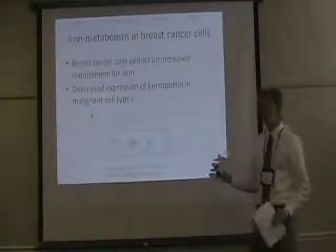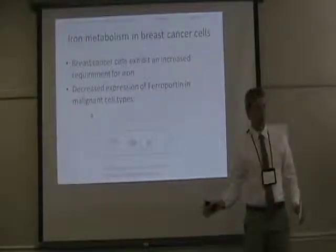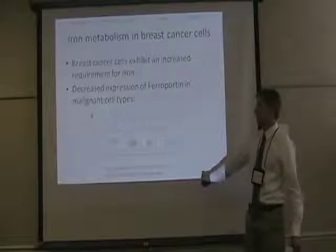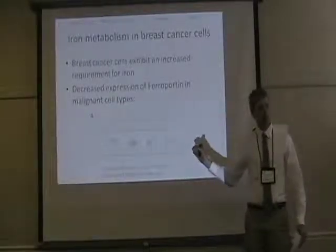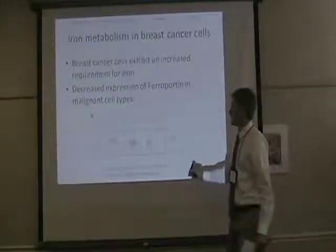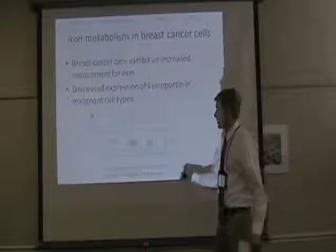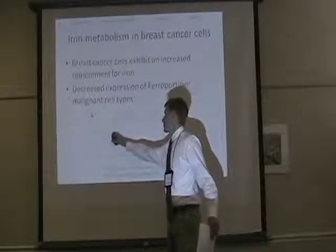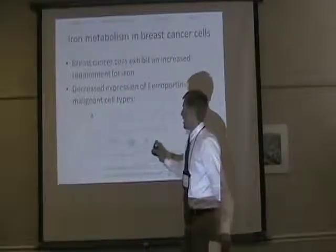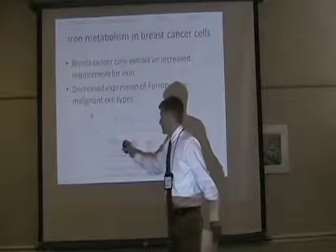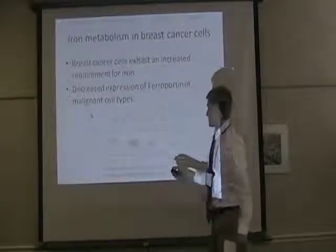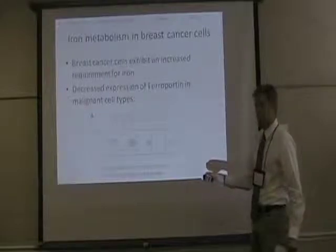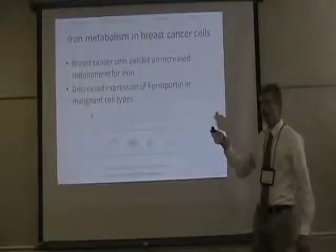Iron plays a role in breast cancer cells. Breast cancer cells exhibit an increased requirement for iron because the cancer cells are proliferating and producing more, so they need a lot of iron. In breast cancer cells there's a decreased expression of ferroportin, which is the export protein for iron. In malignant cell types there's a decreased expression. You can see this on a Western blot — paired normal and malignant breast cancer cells — and in the malignant cell ferroportin was not expressed, showing a decreased amount of ferroportin.